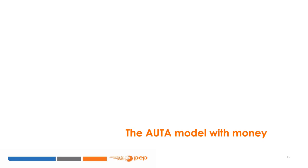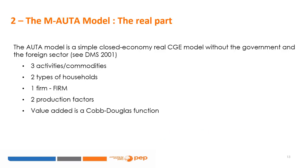We will now consider a simple monetary model. The AUTA model is a simple closed economy real CGE model without government — see DMS 2001. There are three activities/commodities: agriculture, manufacturing, and services. There are two types of households: SAL households, where labour is the only source of income, and CAP — capitalist households — receiving only capital income. There is one firm only, designated as FIRM. There are two production factors, labour LD and capital KD, and the value added is a Cobb-Douglas production function.